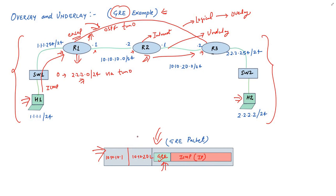it comes to know about the GRE packet inside it. R3 will decapsulate this packet, remove the GRE header, and forward the original IP packet towards H2.